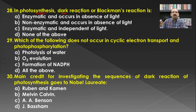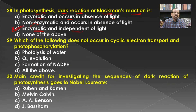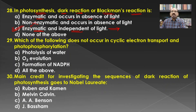In photosynthesis, the dark reaction or Blackman reaction is enzymatic and independent of light. It is not necessary that it occurs only in the absence of light — it can also take place in the presence of light. Non-enzymatic is incorrect; it is enzymatic and light-independent. Hence C is the correct answer. One important note: recent investigations show that many enzymes involved in dark reactions show better performance in the presence of light, suggesting they may be light-influenced, and this concept may change in the future.